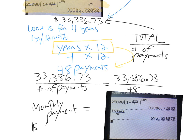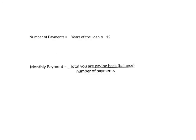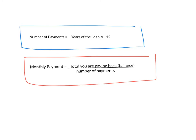Your monthly payment is going to be $695.56 — that's how much you're going to be paying back per month for your loan. You take the total you're paying back and divide it by the number of payments. The number of payments is your years times 12. Here are the formulas to have in your notes: number of payments equals years of the loan times 12, because there are 12 months per year. Monthly payment equals the total balance divided by the number of payments.